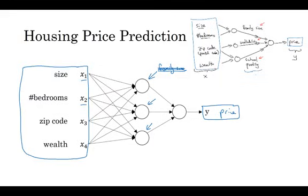So we say that the layers, that is this input layer, and this layer in the middle of the neural network are densely connected, because every input feature is connected to every one of these circles in the middle. And the remarkable thing about neural networks is that given enough data about X and Y, given enough training examples with both X and Y, neural networks are remarkably good at figuring out functions that accurately map from X to Y.